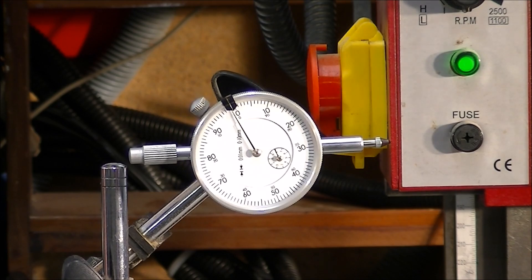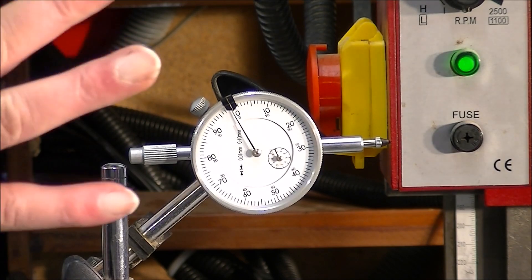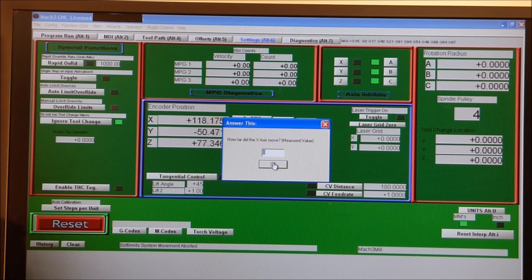When I press this, this should register one complete turn. Actually that was two exactly, two complete turns, so it moved twice the amount. In this box I'm going to say it moved two millimeters and press OK.